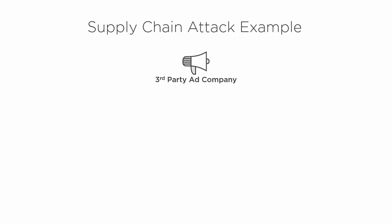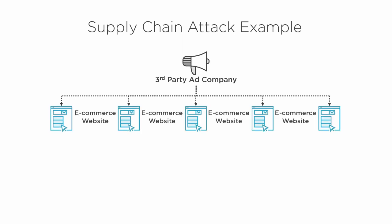Another example: here we have a third-party ad company — an advertising company that deals with many different customers. As you might imagine, they could be a weak link in the chain. In this example, they create components that live on e-commerce websites — some JavaScript and other things they push out to e-commerce websites to deliver ads and marketing collateral. There are a number of different websites this code goes to.